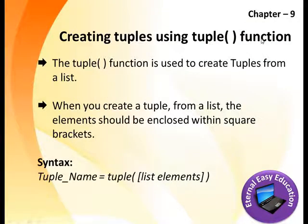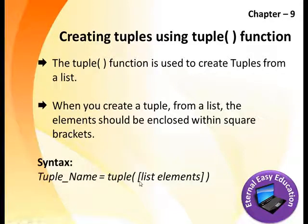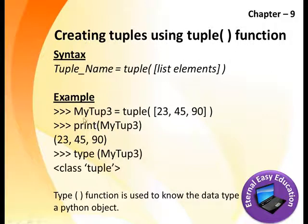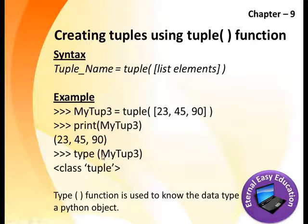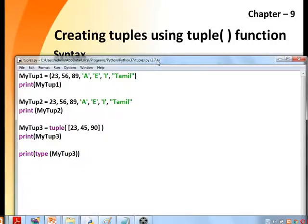Creating tuples using the tuple() function: the tuple() function is used to create tuples from a list. When you create a tuple from a list, the elements should be enclosed within square brackets inside the parentheses. For example: my_tuple3 = tuple([2, 3, 4, 5, 19]). The type() function is used to display the data type of a Python object.